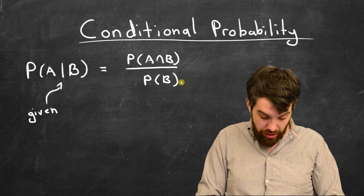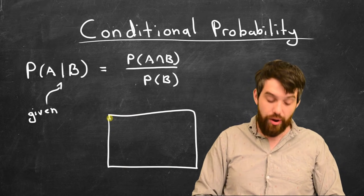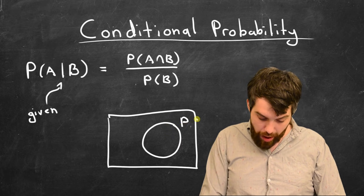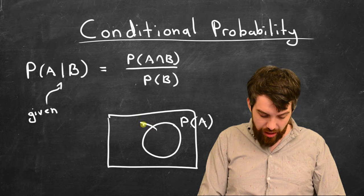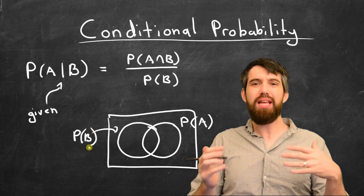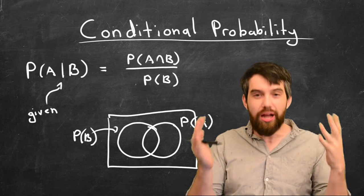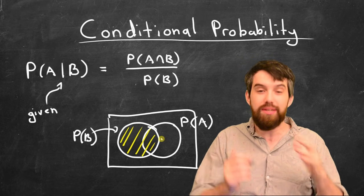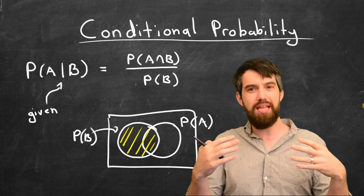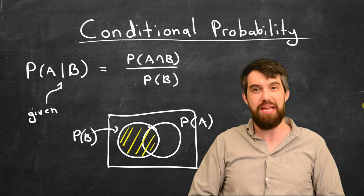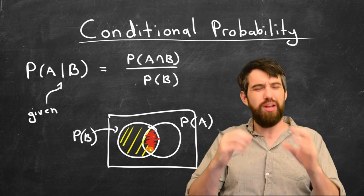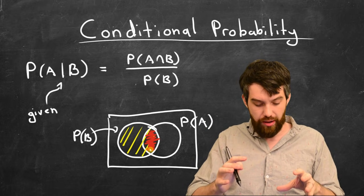We can visualize how this works using a Venn diagram. Within my entire universe of possibilities, I have some probability of event A occurring and some probability of event B occurring. Conditional probability is saying: I'm in the scenario where event B is occurring. What I'm really interested in is the probability of event A occurring given that I'm in event B — which is this intersection here. I care about the ratio of the probability of the intersection to the probability of B occurring: the red divided by the yellow.